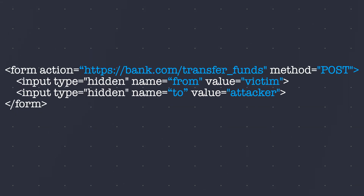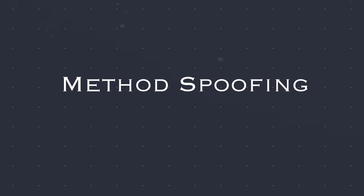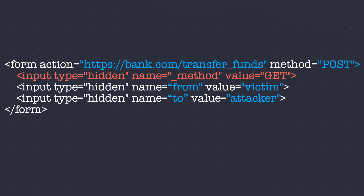Now let's have a look at bypasses for the lax security level. Servers sometimes accept both GET and POST requests, even for form submissions. If they use lax restrictions for session cookies, you might still perform a CSRF attack with a GET request, as long as the request is induced by the victim clicking a link — otherwise known as top-level navigation — and the victim's session cookie will be included. Even if a GET request isn't allowed, method spoofing can sometimes override the request method. For example, Symfony supports the method parameter in forms, which can change the request method used for routing.